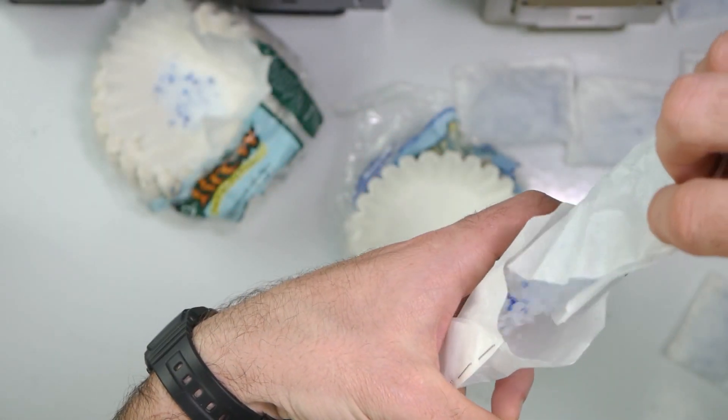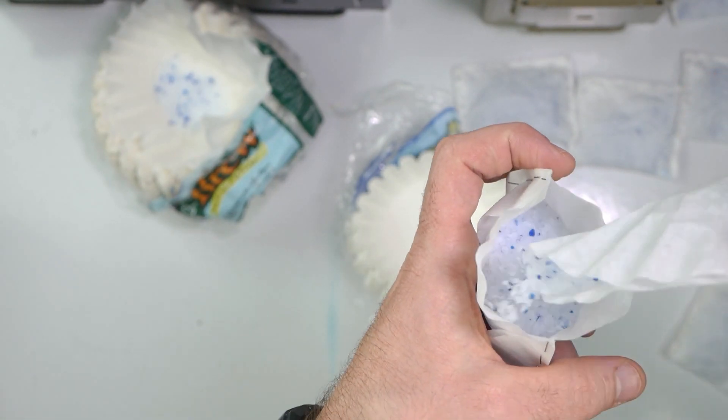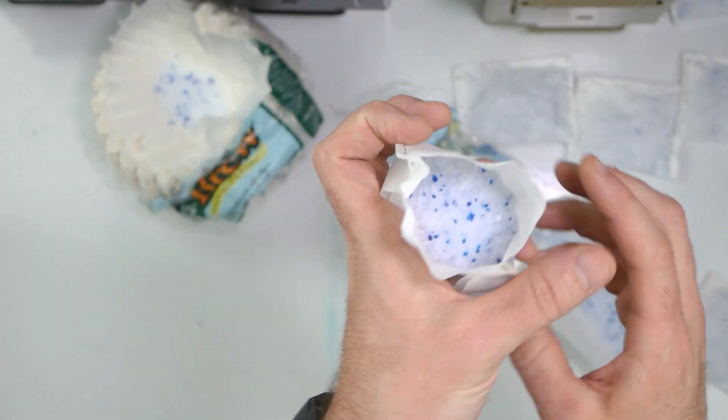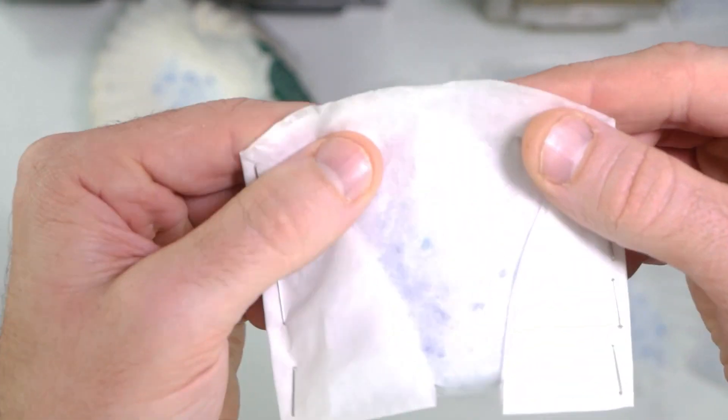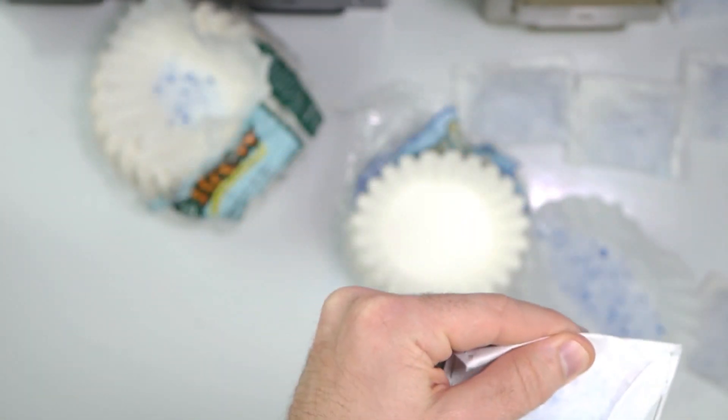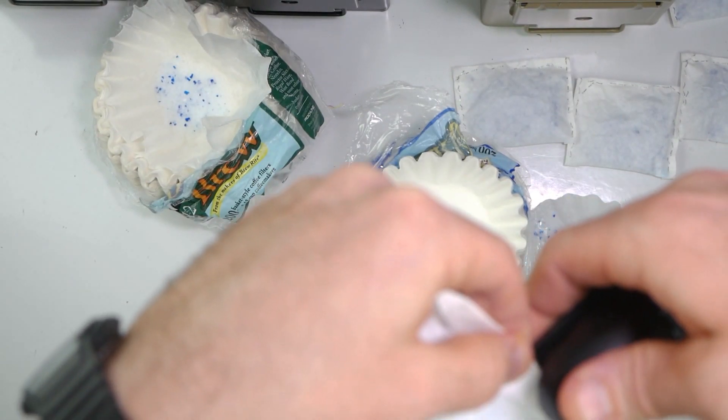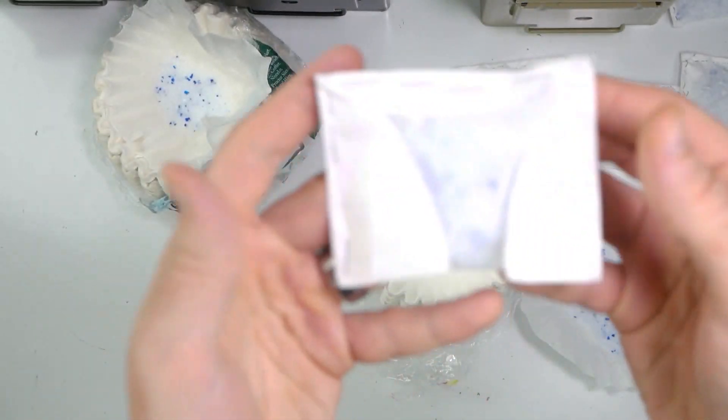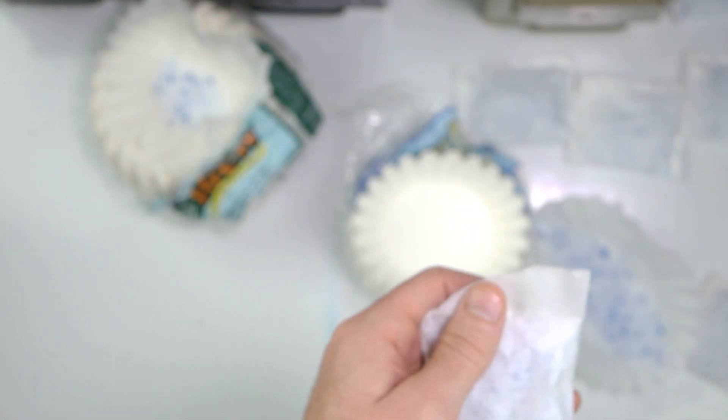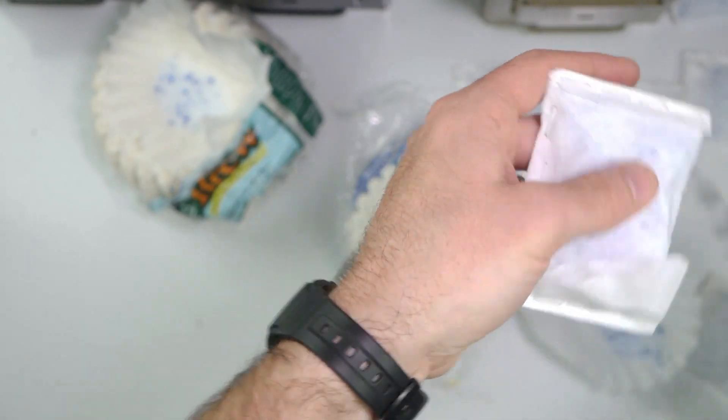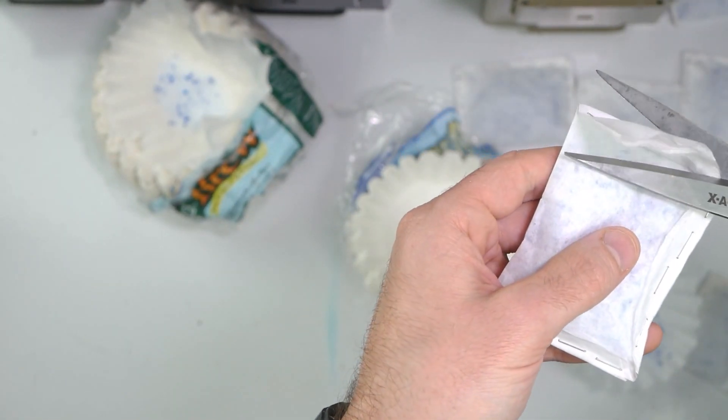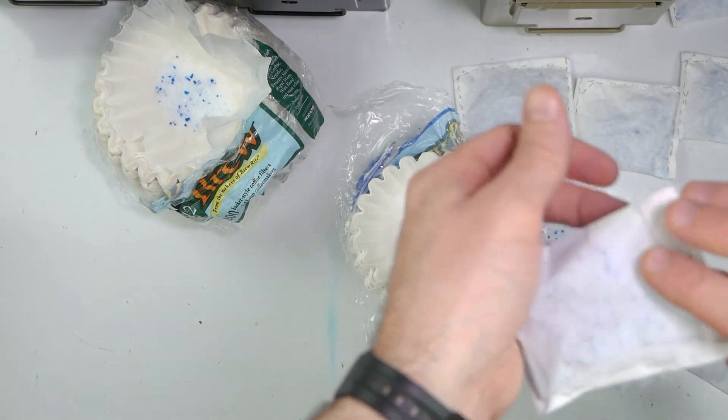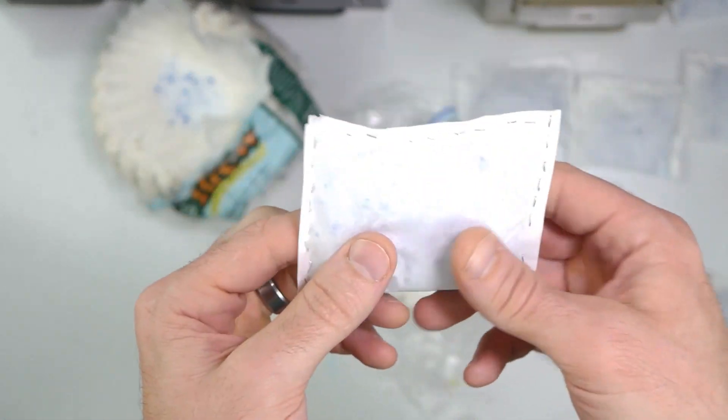I'll just take this one and just pour it until it gets to a certain point there. You'll kind of figure out that's a little bit too much. That's about right. Fold it over. Something like that. And then I was just taking these scissors, just cutting that off. And there you go.